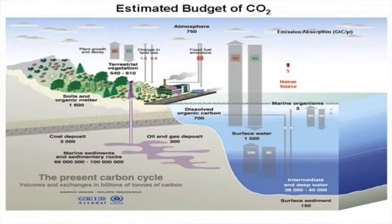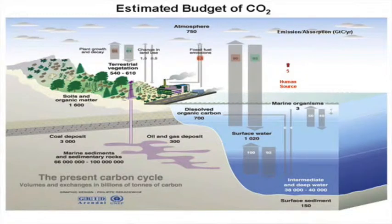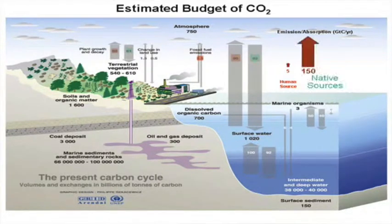This is the estimated contribution from all sources and sinks. The human source is of order 5 gigatons per year. By comparison, the ocean emits of order 90, and land emits another 60. Total emission from native sources is thus of order 150 gigatons per year — 96% of the total.